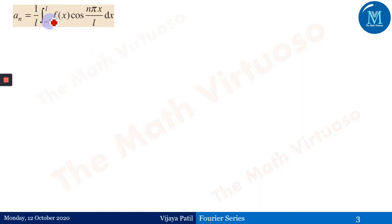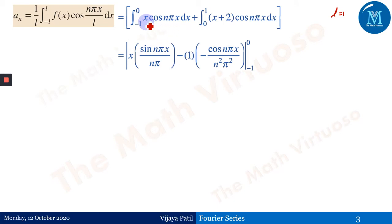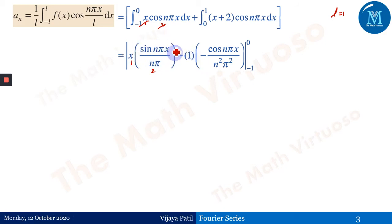Similarly, aₙ equals 1 upon l times the integral from minus l to l of f(x) cos(nπx/l) dx. Since l equals 1, this becomes the integral from minus 1 to 0 of x cos(nπx) dx plus the integral from 0 to 1 of (minus x plus 2) cos(nπx) dx. Applying integration by parts — taking x as the first function and cos(nπx) as the second — the integration of the second function gives sin(nπx) upon nπ. Then minus the differentiation of the first into the integration of the second gives minus cos(nπx) upon n²π².